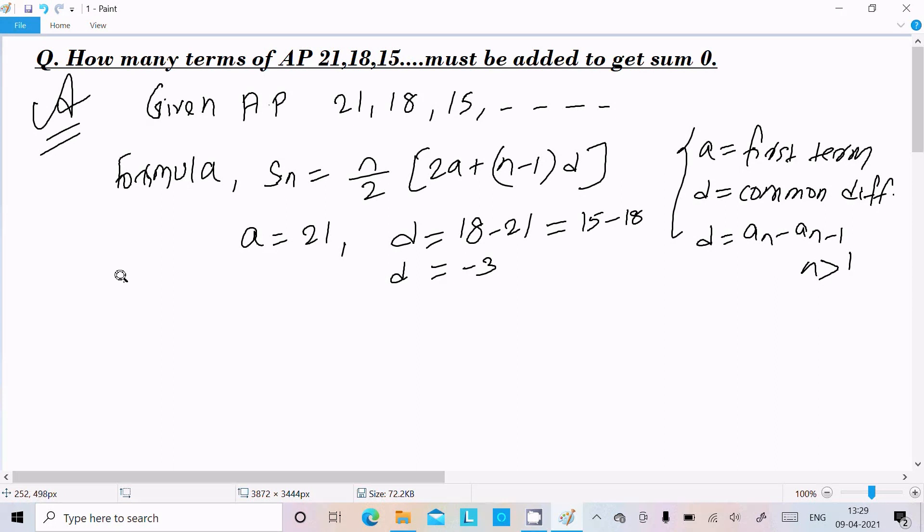Now here according to question, how many terms must be added to get sum equal to 0? So here sum equal to 0. Or we can write sum, or in bracket write here Sn equal to 0. So n by 2, and 2a plus (n minus 1) into d equal to 0.